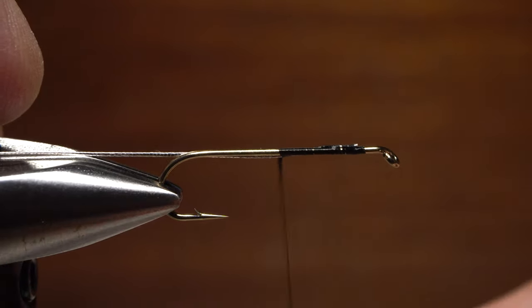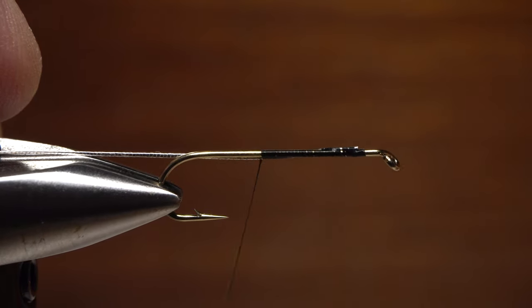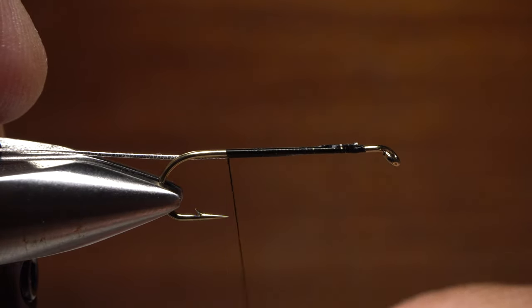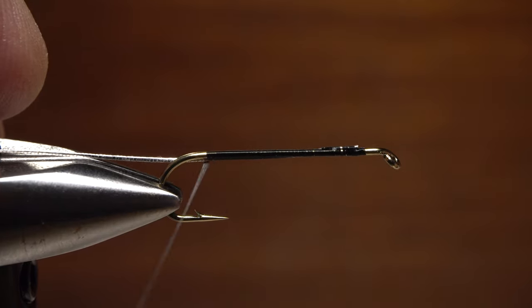Giving your bobbin a good counterclockwise spin every so often will uncord and flatten the thread and allow you to create a very thin, even underbody on the fly. Keep taking these thin, flat, touching wraps all the way back to the start of the hook bend.